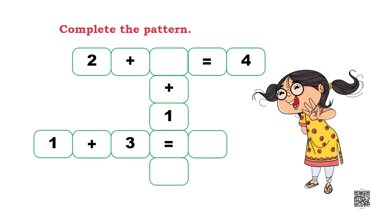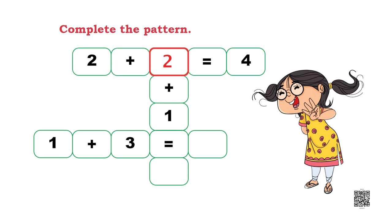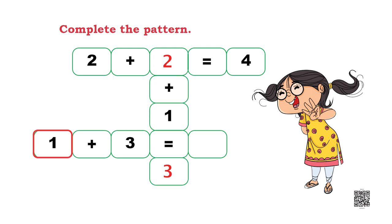Complete the pattern. It is written here: 2 plus dash is equal to 4, so what could be the number? 2 plus 2, so the answer is 2. Next, 2 is already there, plus 1 is equal to how much? 3. And the next one is 1 plus 3 is equal to 4.